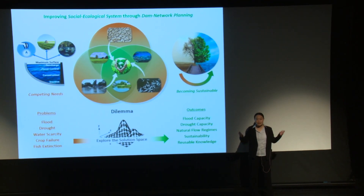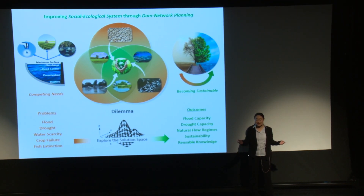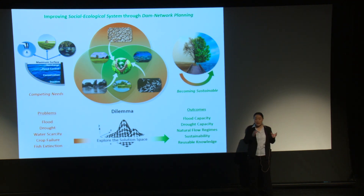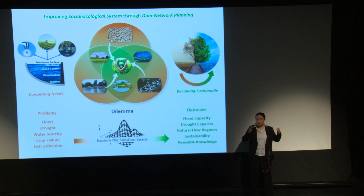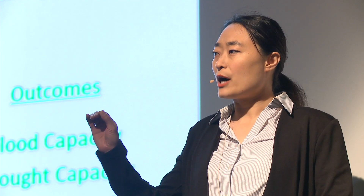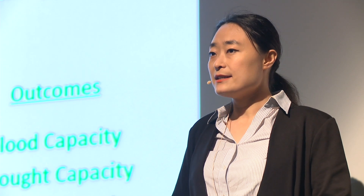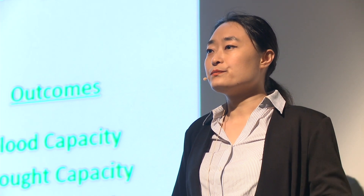We have more than 16 million dams in this world. Dams are built to control the flow of water to achieve a variety of goals: suppressing floods and drought, conserving wildlife, providing water for activities such as human consumption, irrigation, and so on. But do those dams work as well as we expected? The answer is no.